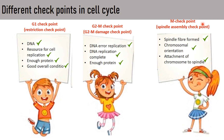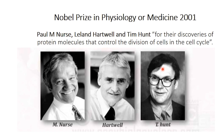In the M phase, the spindle assembly checkpoint checks whether the spindle fibers have formed correctly, whether chromosomal orientation is correct, and whether chromosomes are properly attached to the spindle fibers, before giving the green signal to proceed.